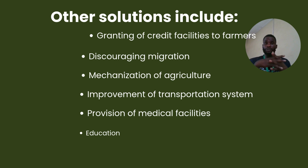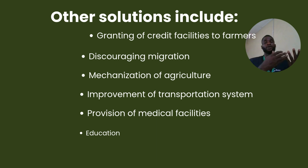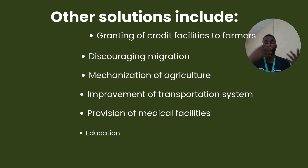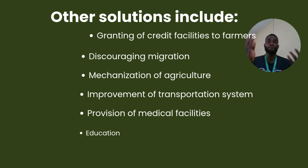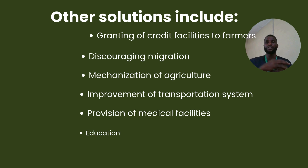Other solutions include: granting of credit facilities to farmers, discouraging migration by providing all basic resources and amenities needed by farmers, mechanization of agriculture instead of subsistence farming, improvement of transportation systems, and provision of medical facilities and education in local areas.